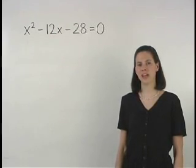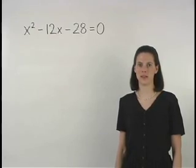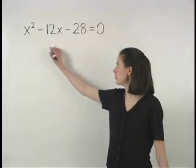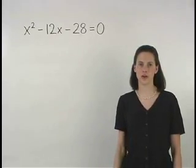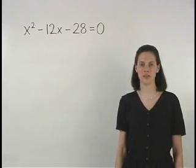When an equation has a squared term in it, such as x squared minus 12x minus 28 equals zero, it's called a polynomial equation.